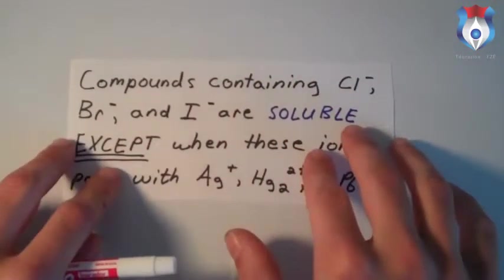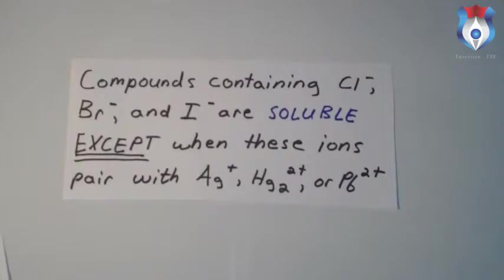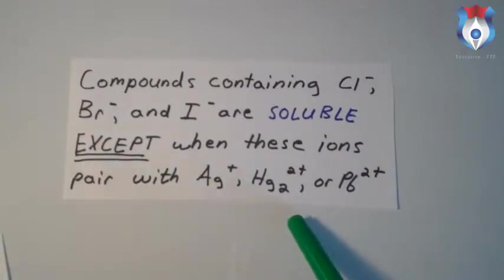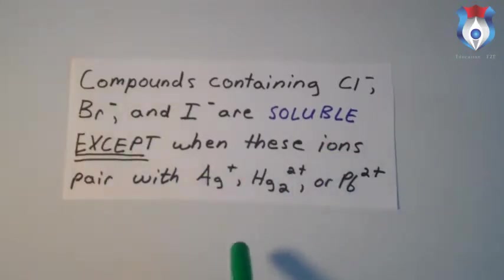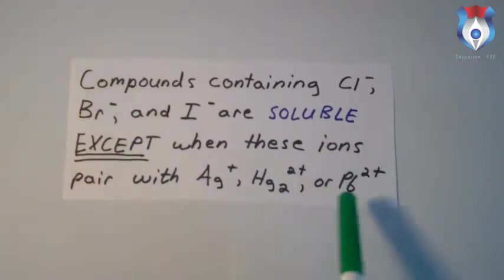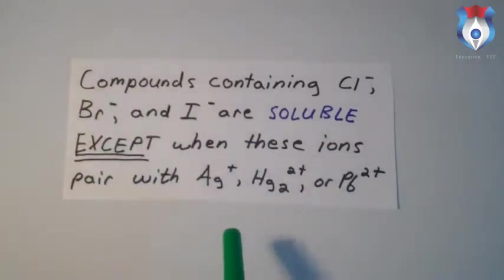Second rule: compounds containing chloride ion, bromide ion, and iodide ion are soluble, except when these ions are paired with silver ion, Hg₂²⁺ ion, or the lead(II) ion. Unless the compound contains these three ions, it will be soluble; otherwise it will be insoluble.